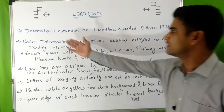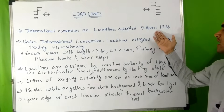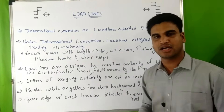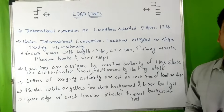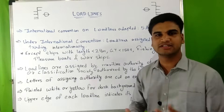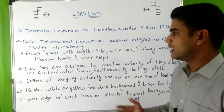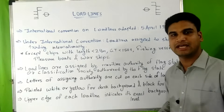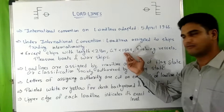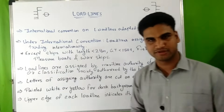The International Convention on Load Lines was adopted on 5th April 1966. Under this convention, load lines were assigned to ships trading internationally or engaged in international voyage, except ships with length less than 24 meters, gross tonnage less than 150, fishing vessels, pleasure boats, and warships.